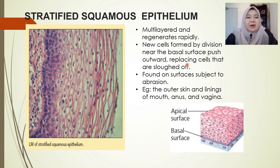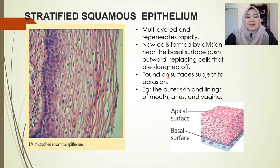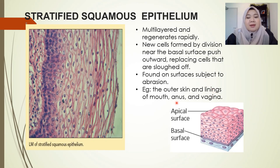You can find stratified squamous in surfaces where abrasions happen, because the cells need to be easily removed and quickly recovered. You can find them in the outer layer of our skin, the linings of the mouth, anus, and also the vagina.